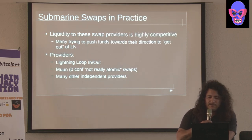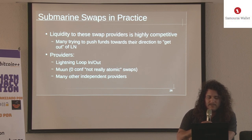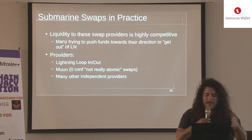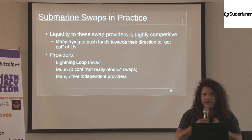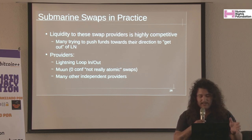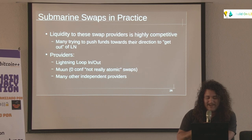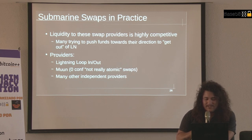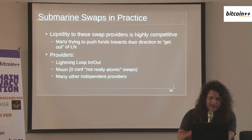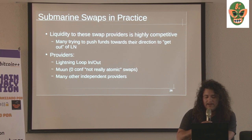In practice, there are several liquidity providers offering submarine swapping services — Lightning Loop, for example, has in and out. For better on-chain privacy you want to get someone else's UTXO, so Lightning Loop Out is what you'd want. Also, little known fact: Moon is basically a submarine swap wallet. It's not really Lightning and not really atomic swaps — it's zero-conf so it's not atomic — but they use the same mechanism. Anyone can start their own submarine swap liquidity service.